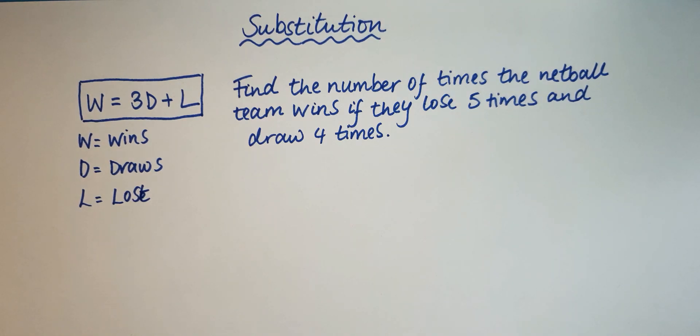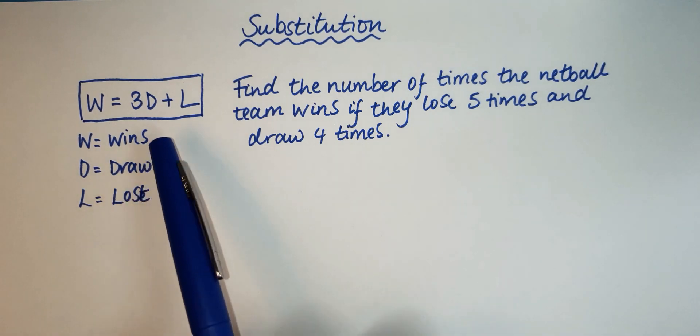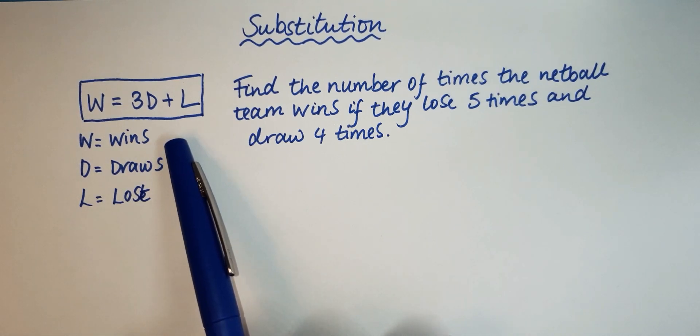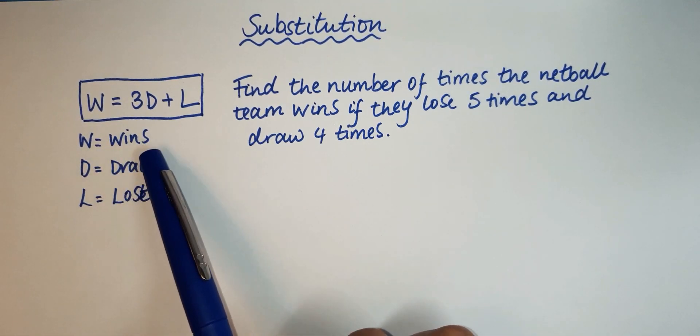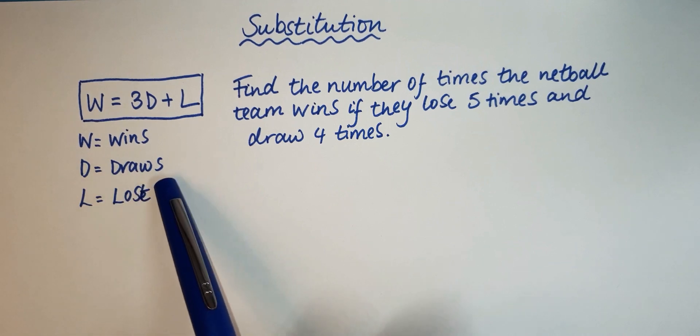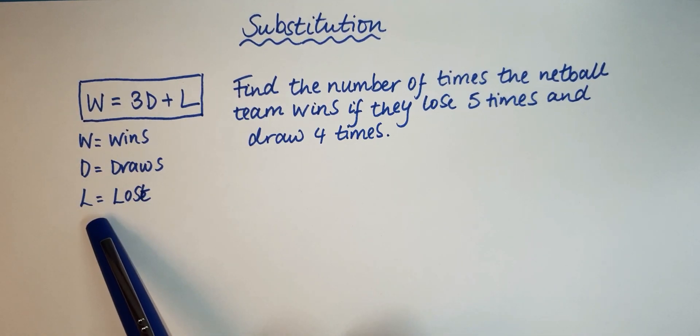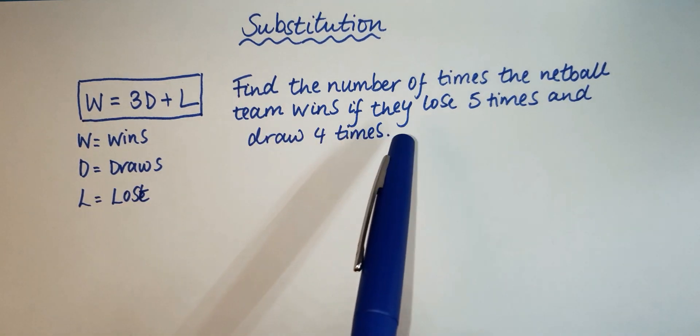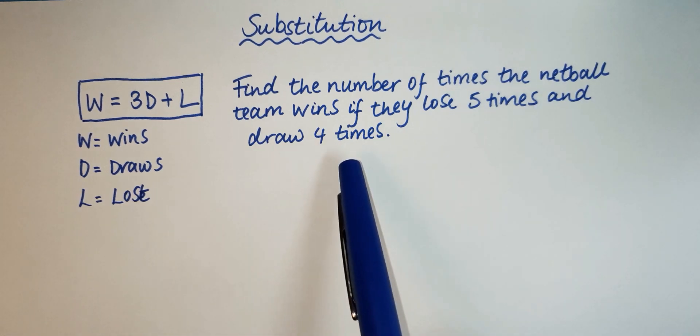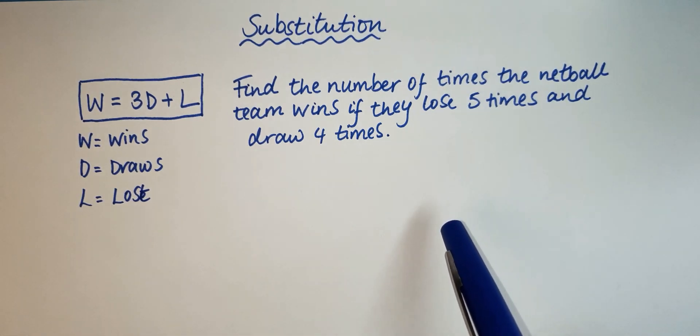So here is an example of a question that you could get. What it's saying is about a netball team and you've been given an equation or formula to use where W is the number of wins, D is how many times they draw, and L is the number of times that the netball team have lost their game.